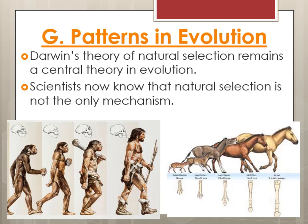Darwin's theory of natural selection remains the central theory of evolution. Scientists know now that natural selection isn't the only mechanism, and we have expanded on his ideas since. Because of genetics and our improved technology, that has allowed us to expand our ideas about how evolution works.